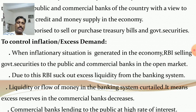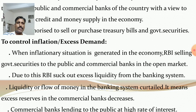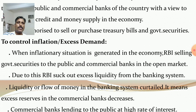Whether RBI is selling to the public or directly to the commercial banks, in both cases money transfers from the accounts of commercial banks to RBI. So excess liquidity in the banking system is curtailed or curbed. This means excess reserves in the commercial banks decrease, because money has already been transferred from commercial banks to RBI. Excess reserves are over and above the minimum reserve requirement of the banks, and all commercial banks use excess reserves for lending purposes.